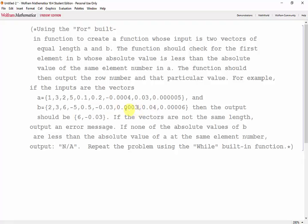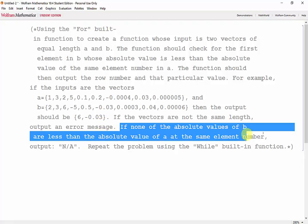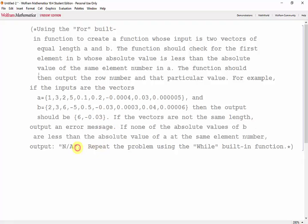If the vectors are not the same length, output an error message. If none of the absolute values of b are less than the absolute value of a at the same element number, output N/A. Repeat the problem using the while built-in function.